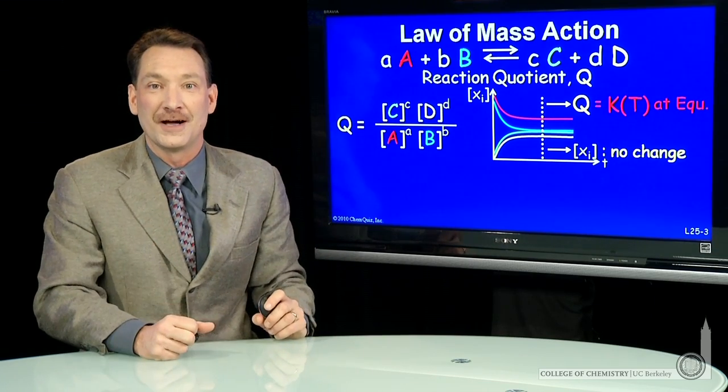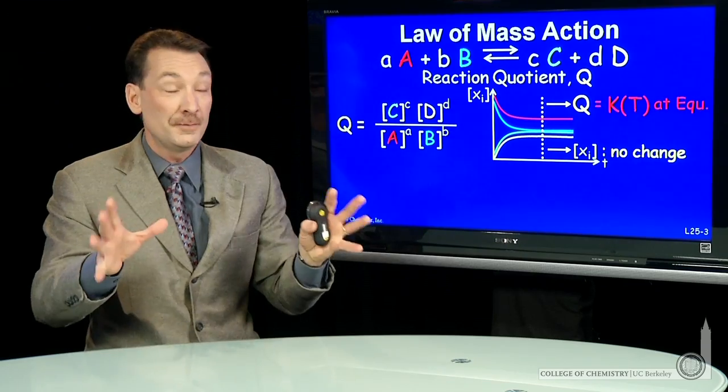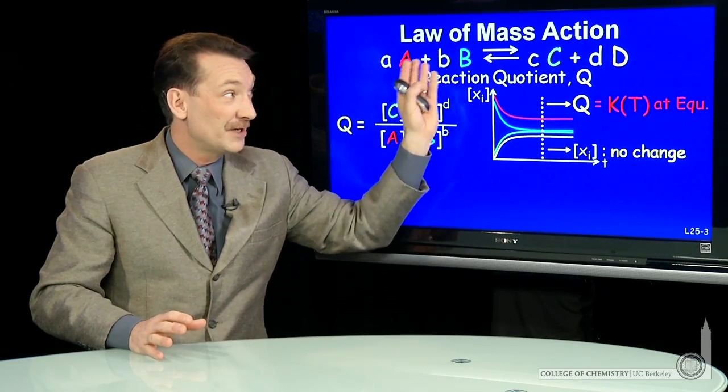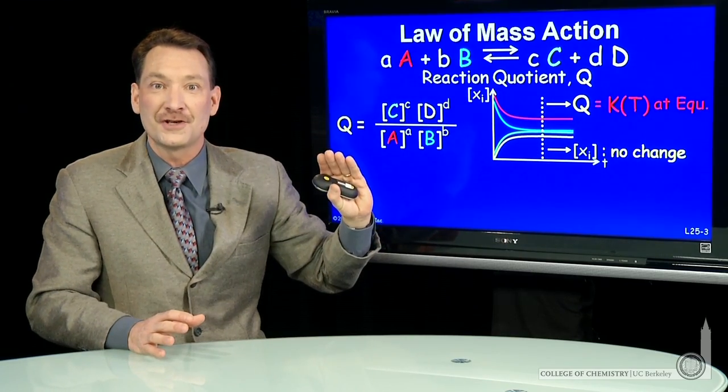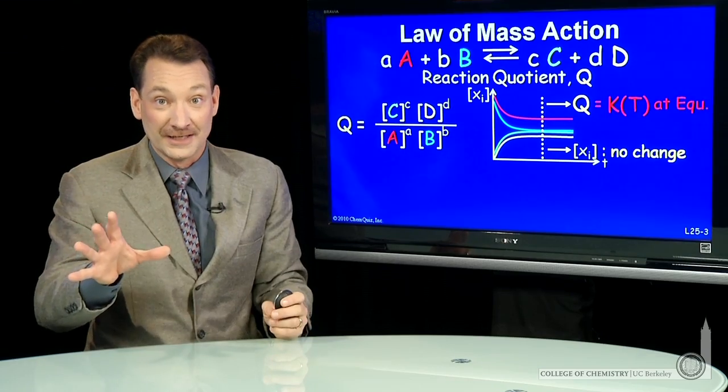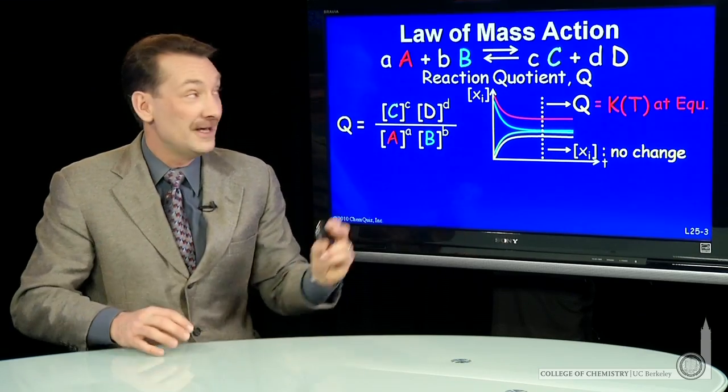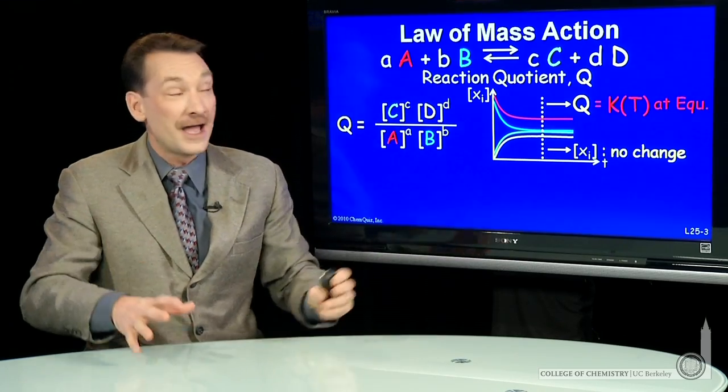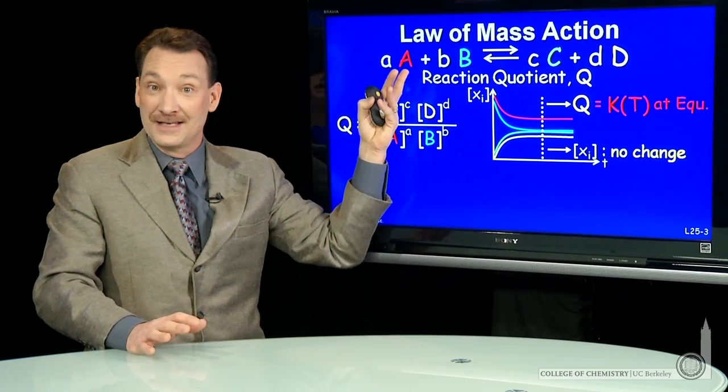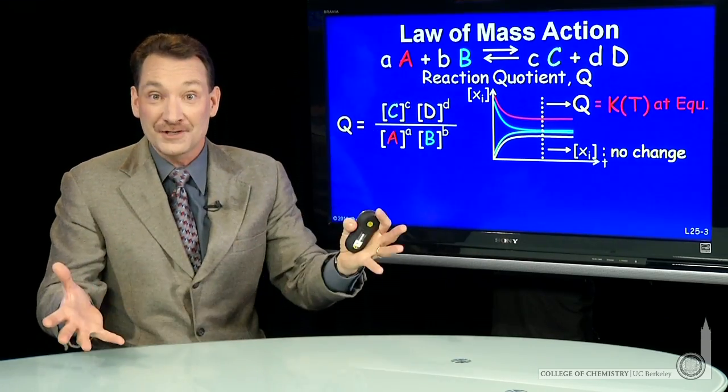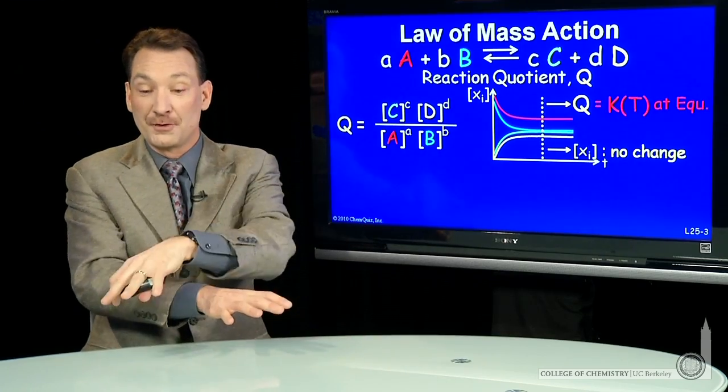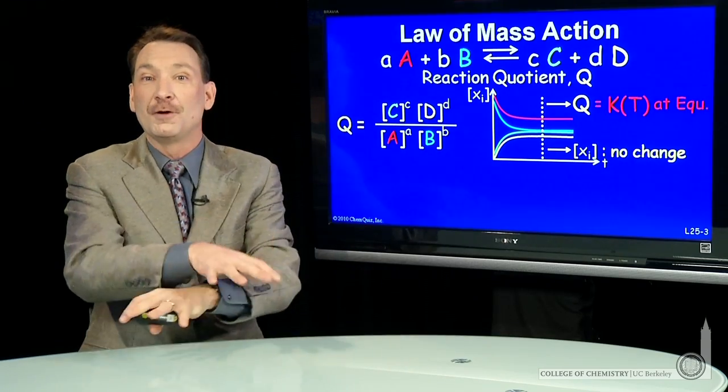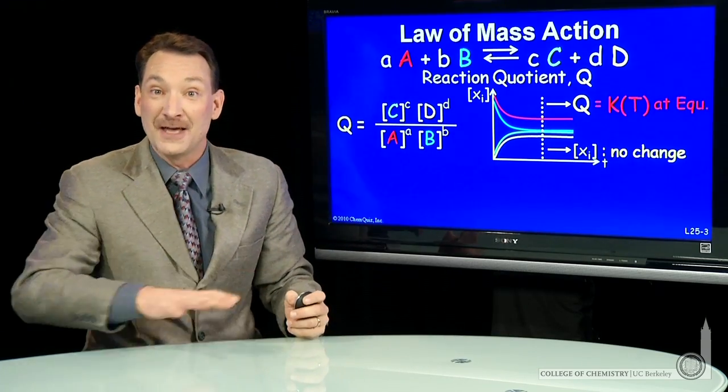Now, the equilibrium constant is a constant because the macroscopic concentrations aren't changing. But dynamically, the reaction is still active. That is, A and B are still changing into C and D. It's just at the same time, C and D are changing back into A and B. So macroscopically, things don't change. But the reverse and forward rates have equalized. So it's a dynamic equilibrium.